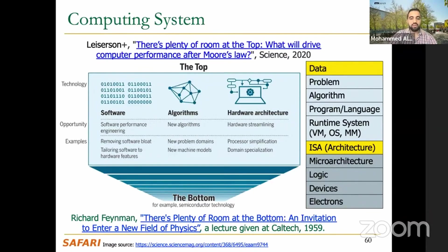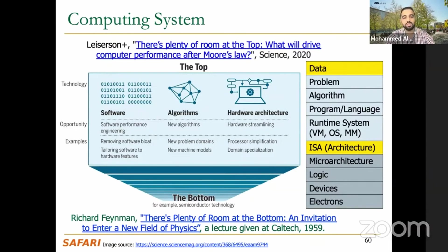Regarding differences between individuals and pan-genomics: diseases not caused by large structural variations can still be well-detected using a single reference — for example, SNP (single nucleotide polymorphism) detection, which involves only single-character changes. Some algorithms are tailored specifically for SNP detection, some for HiFi reads, and some for nanopore reads. Picking the right algorithm for the right application gives the best performance for those specific corner cases.